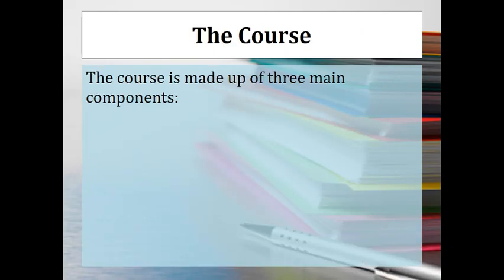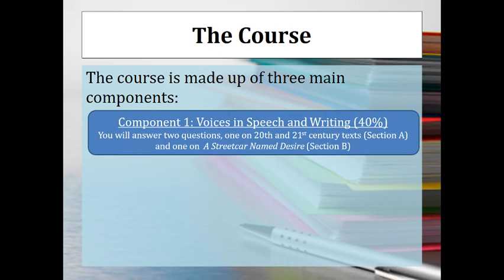The course for English Language and Literature is made up of three main components. Component one is called Voices in Speech and Writing, and that accounts for 40% of the total marks. It's split into two sections. Section A is on the anthology texts from the 20th and 21st century — at A-Level, you'll compare one anthology text with an unseen text. Section B involves an extract from A Streetcar Named Desire, which you'll use to answer a larger essay question.